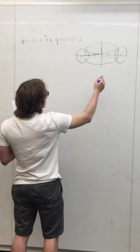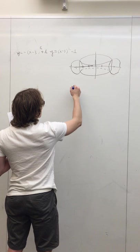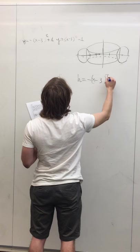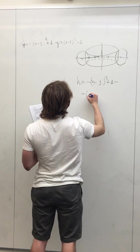So in order to find the volume of the solid, you can use the shell method. And the height of one typical shell will be the difference between these two functions. And it will be equal to minus x minus 3 all squared plus 1.